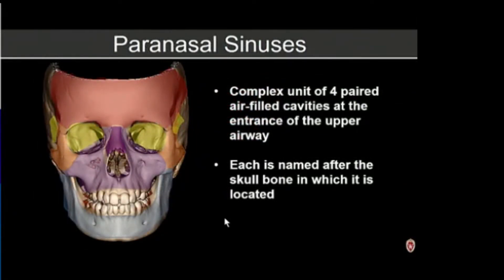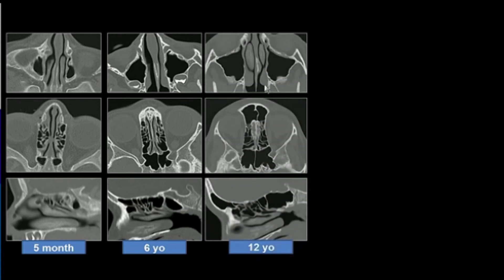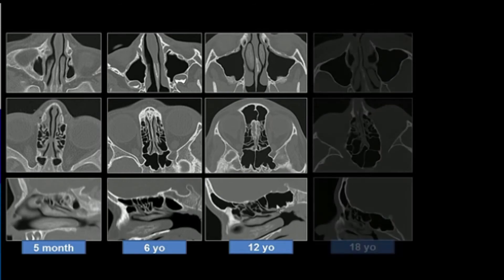Moving on to the paranasal sinuses — these are a complex unit of four paired air-filled cavities at the entrance of the upper airway, each named after the skull bone in which it is located. The maxillary sinus is the first to develop in utero. At birth, air cells are visible within the ethmoid cavity and maxillary sinus. By six years of age, we start to see more pneumatization within the sphenoid and more adult-like pneumatization within the maxillary and ethmoid sinuses, with the frontal sinus beginning to pneumatize and continuing through adolescence.